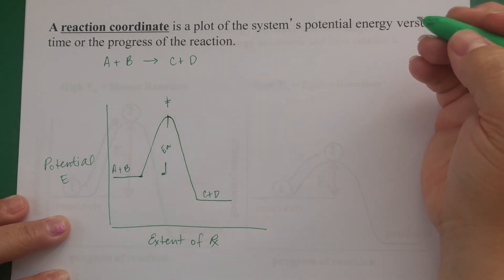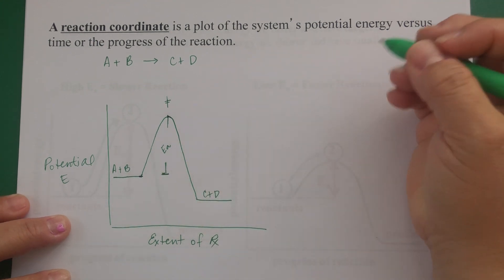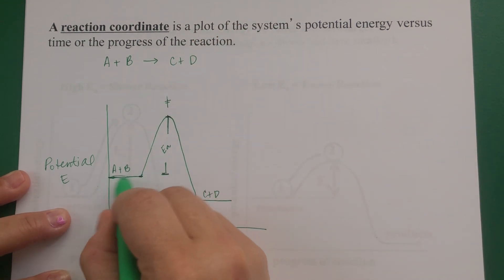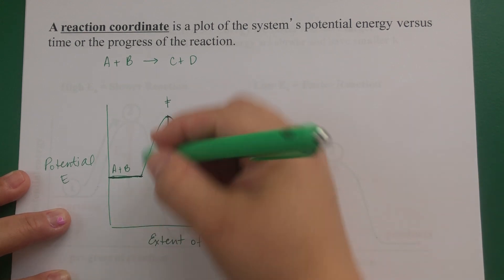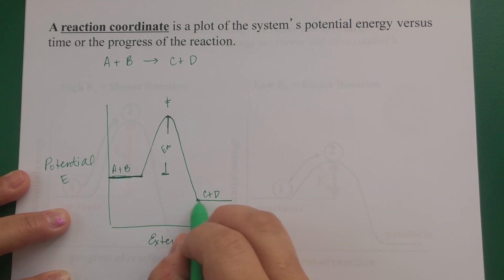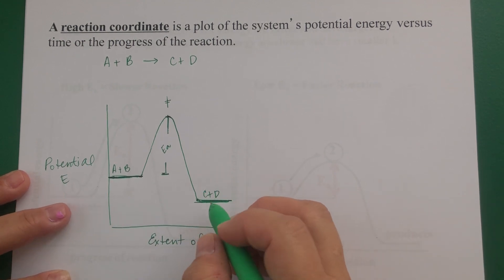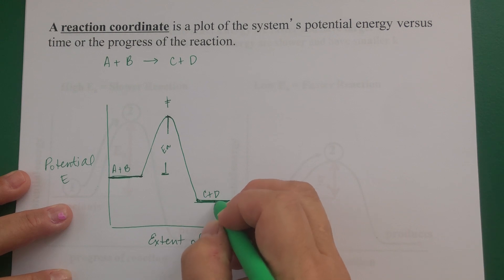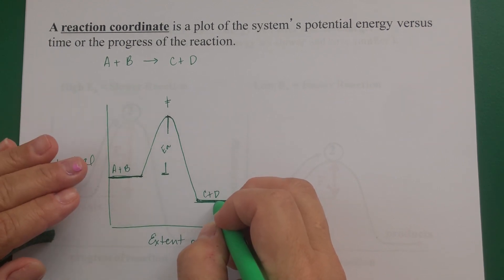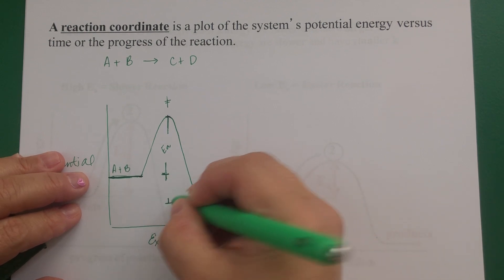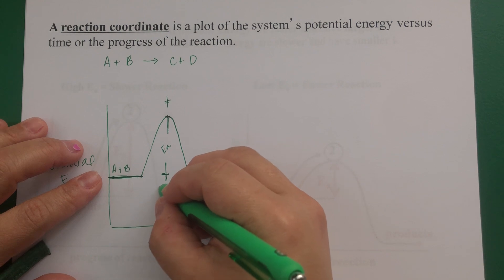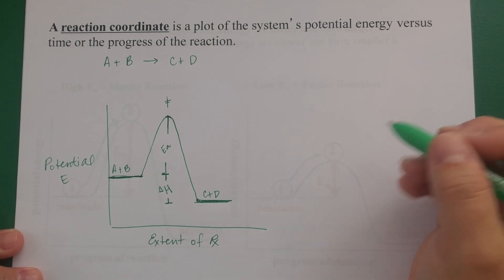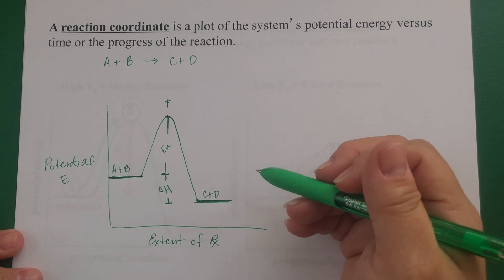Looking at the reaction coordinate, the potential energy of the reagents and products are each represented as levels. In this example, I drew the products at a lower energy content than the reagents. The difference between the energy contents of the products and reagents is delta H — the change in enthalpy — which you studied in thermodynamics.